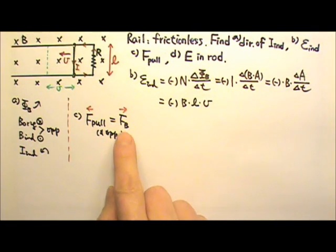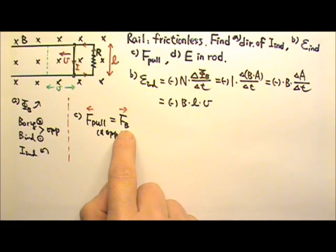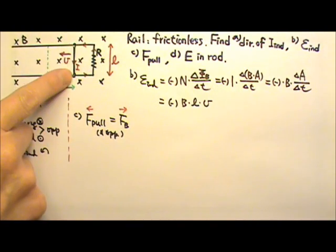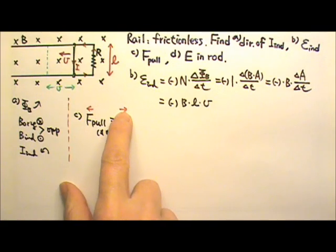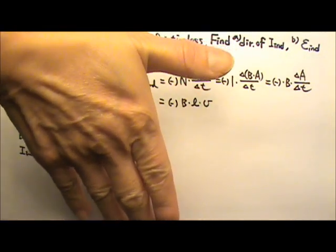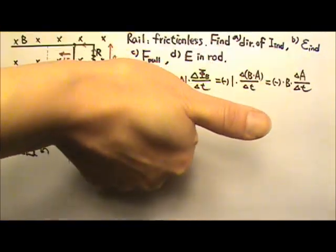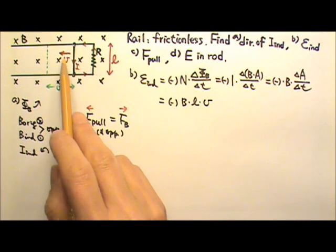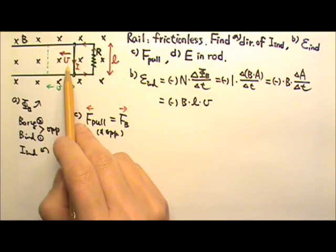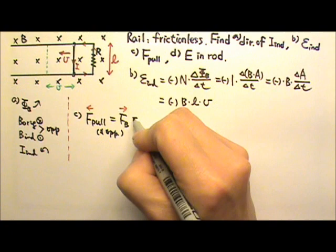Of course, we know that the magnetic resistance force happens because there is an induced current in the magnetic field. So we can also find this direction using L cross B. The force goes that way. But we know since this is going to be a resistant force, it has to be in the opposite direction to the velocity. Now let's find the force.